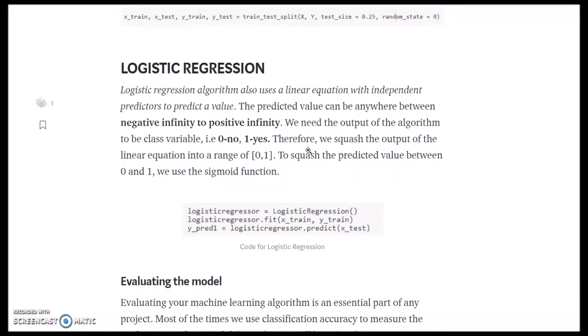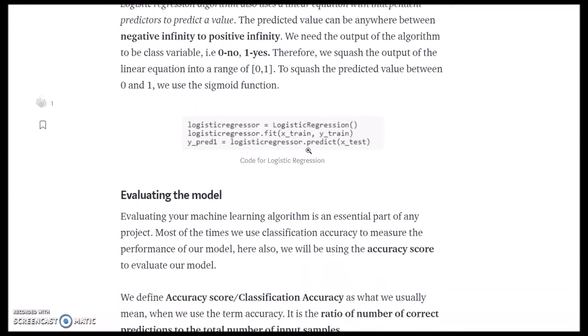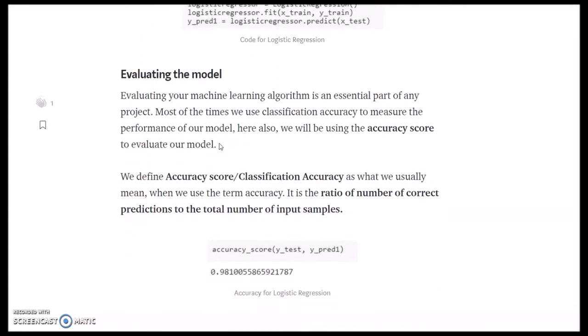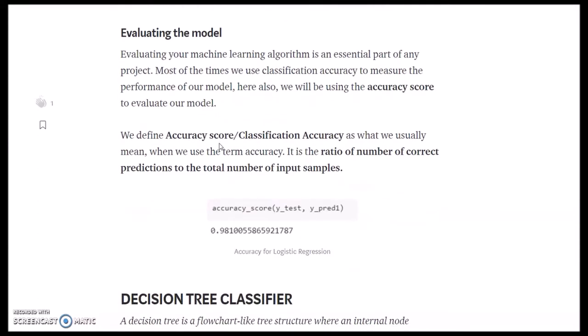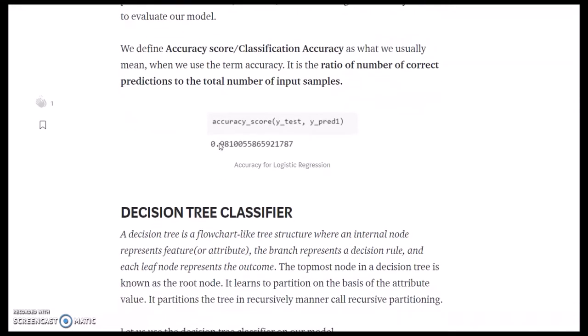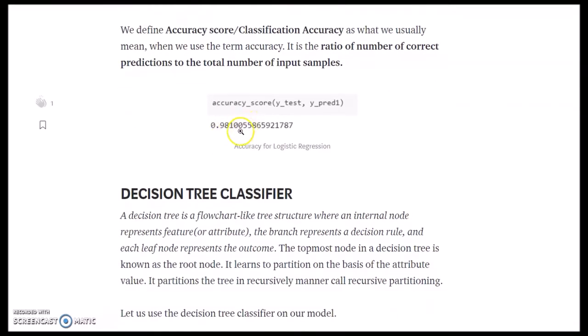Logistic regression. Logistic regression algorithm uses a linear equation with independent predictors to predict a value. The predicted value can be anywhere from negative infinity to positive infinity. We need the output to be a class variable, 0 or 1. Therefore, we squash the linear equation into a range of 0 to 1. We are using accuracy score for evaluation. Accuracy score is the ratio of number of correct predictions to the number of input samples. As you can see, the accuracy for logistic regression is 0.98, which is quite good.